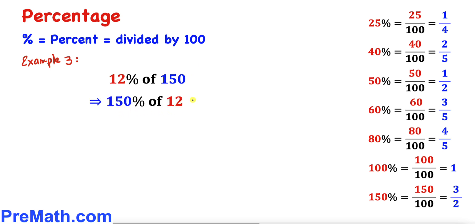Here's our next example: 12 percent of 150. This is same as 150 percent of 12, and if we simplify that, it's going to give us 18.